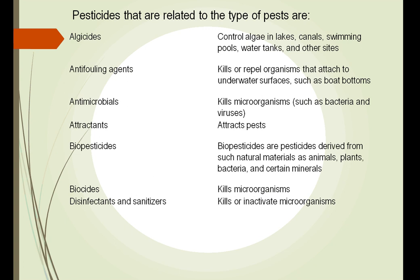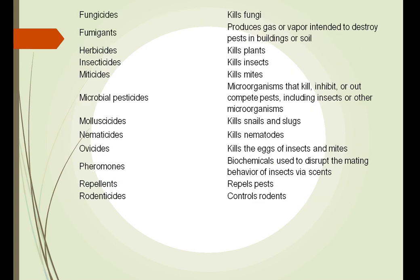Pesticides are related to the type of pest they target. These range from controlling algae, to controlling microorganisms and biocides, to antimicrobials that kill bacteria and viruses, to attractants that attract pests, to fungicides that kill fungus, and miticides that kill mites.